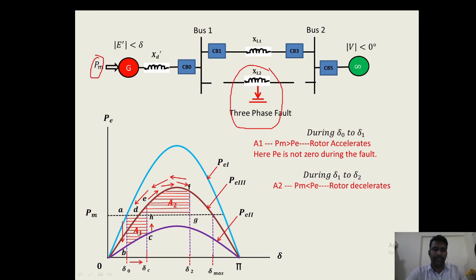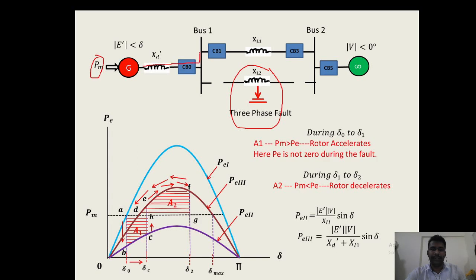P1 is the before-fault curve, P2 and P3 are the during- and after-fault curves. Area 1 must be equal to area 2 under fault condition — only then will the machine remain in synchronism. The power angle equation for curve 2 is P2 = E'V / X2 × sin(delta), where transfer reactance X2 must be found. P3 = E'V / (X_d' + X_L1) × sin(delta) for the after-fault condition.